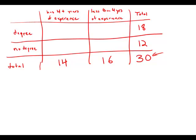And then there are 3 people who fit into this box of no degree and less than 4 years of experience—the people probably who will not get hired. Well, we know that this number and this number have to add up to 16, so this number here must be 13.